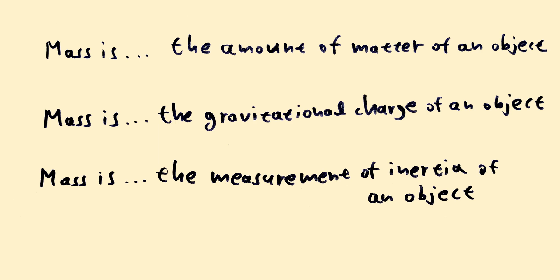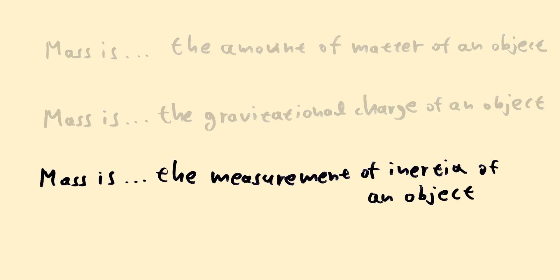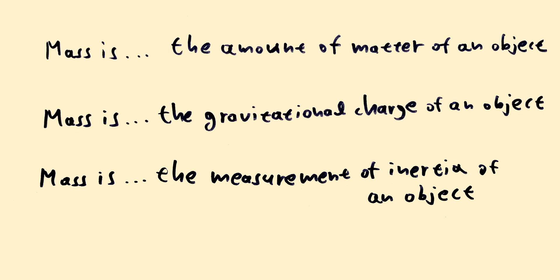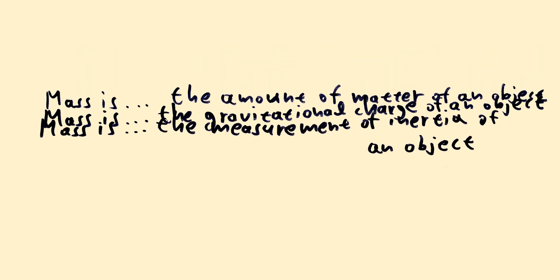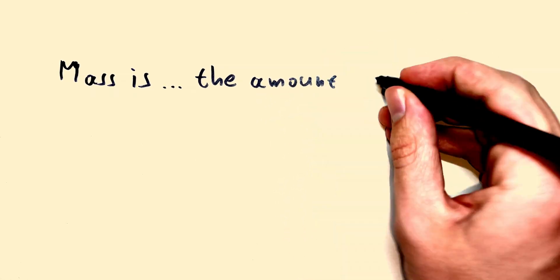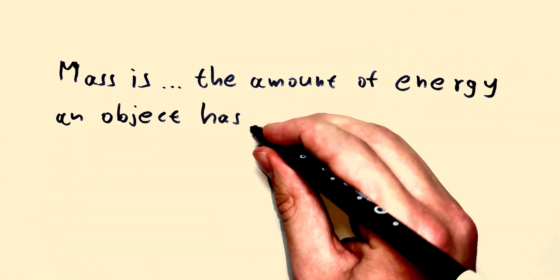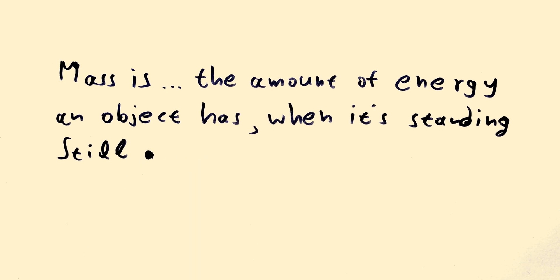Today we will answer the first two. We've already answered the last one in another episode. Well, it turns out that we can group all these definitions into a single one. Here we go. Mass is the amount of energy an object has while it's standing still. Period.